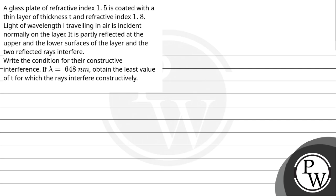Let's read the question. A glass plate of refractive index 1.5 is coated with a thin layer of thickness t and refractive index 1.8. Light of wavelength λ traveling in air is incident normally on the layer. It is partially reflected at the upper and lower surfaces of the layer, and the two reflected rays interfere. Write the condition for their constructive interference. If λ is equal to 648 nanometer, obtain the least value of t for which rays interfere constructively.